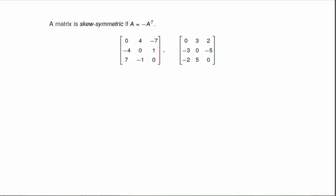A matrix is skew symmetric if A is equal to minus A transpose. So here are two skew symmetric matrices. And you'll see, if I look above and below this main diagonal, the only thing that's different should be a sign change.